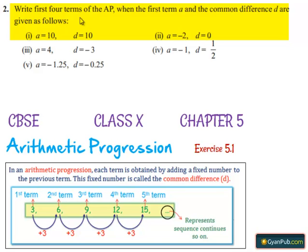Moving on to the second question: write the first four terms of the AP when the first term a and the common difference d are given as follows.